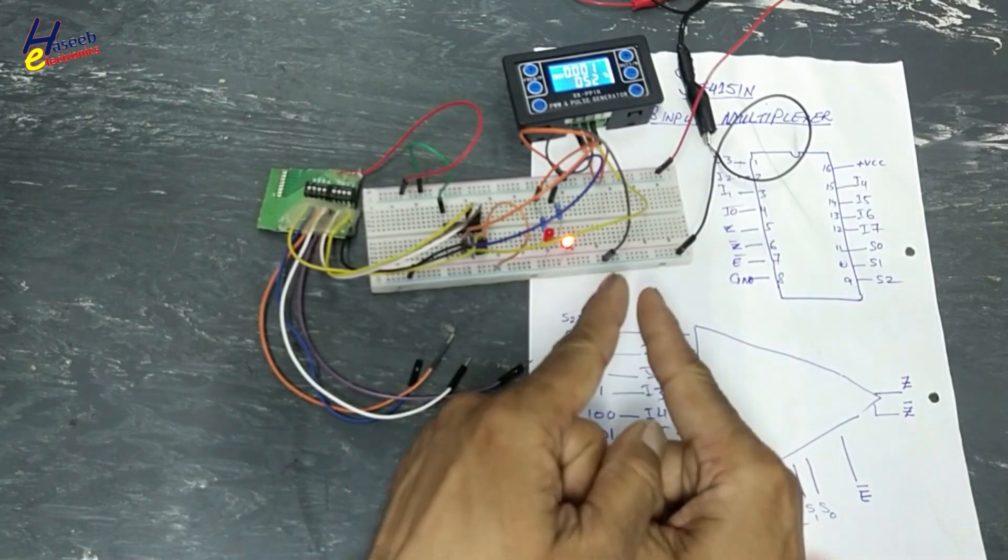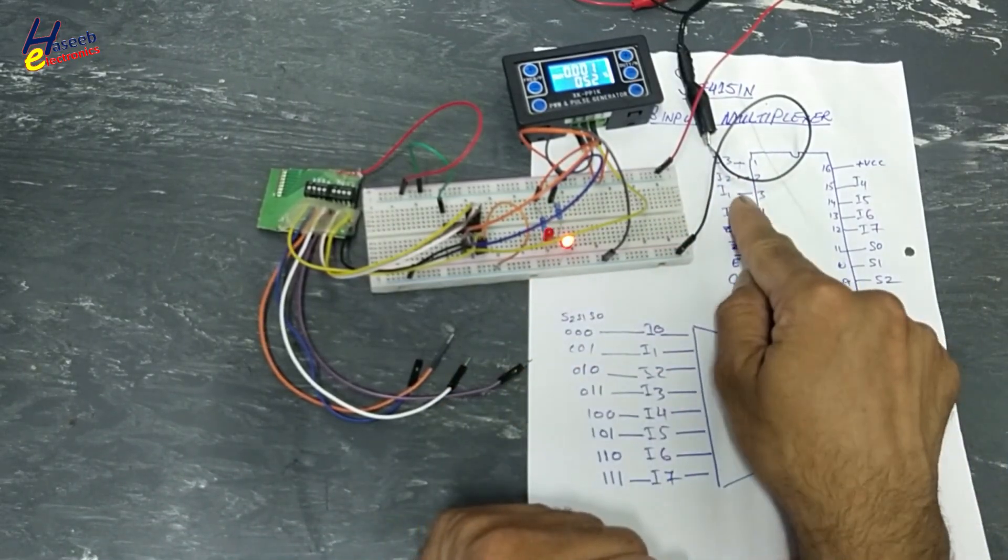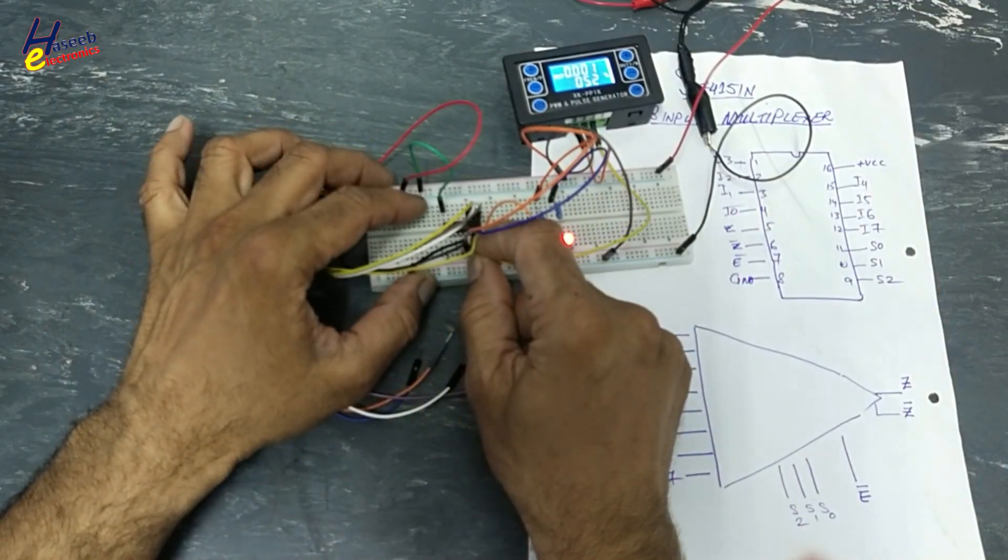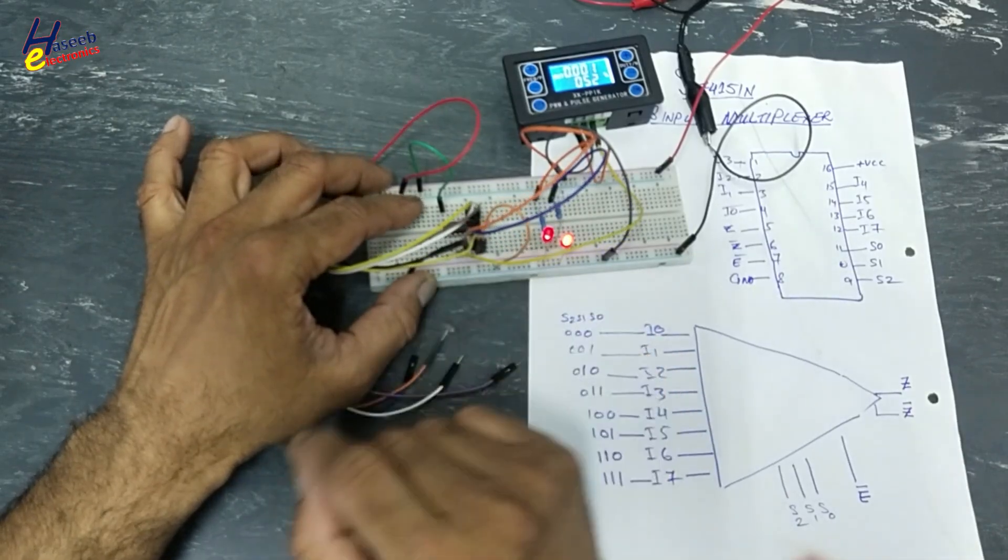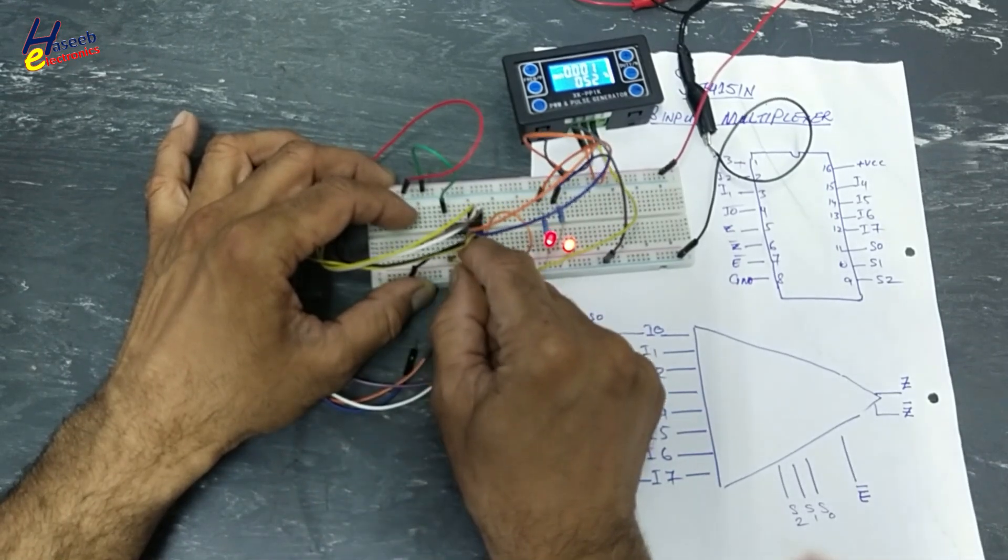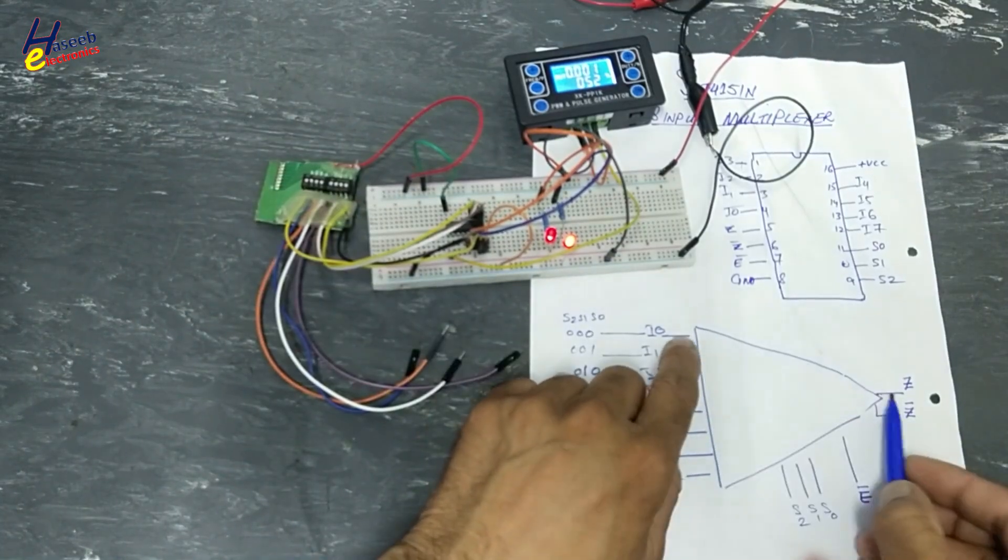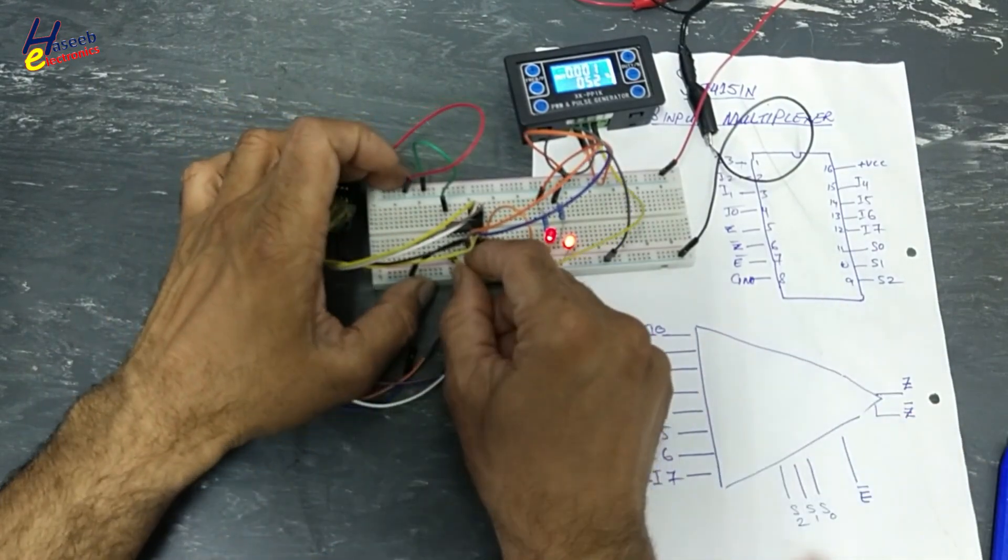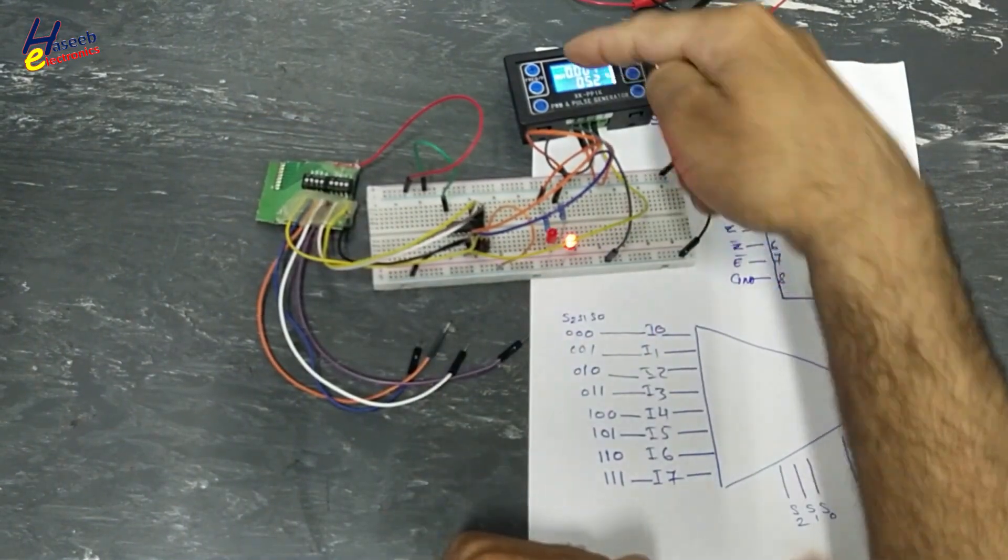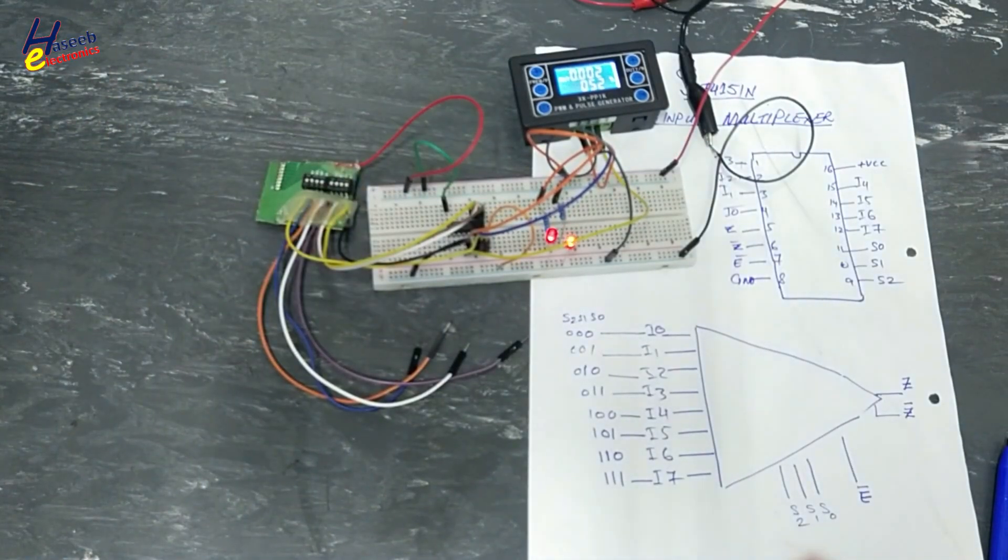we can see this signal is now reaching here in the output. But Z bar is complement signal opposite to that one. I connected pin number 4. Now at this address selection, if I will inject signal to pin number 3, that will not reach. Pin number 2 not connected. Just only pin number 4 will be connected to this point. Again pin number 4. This time this signal is reaching at output.